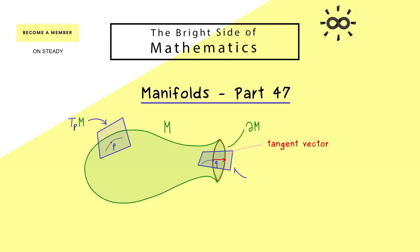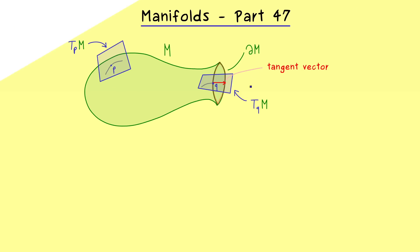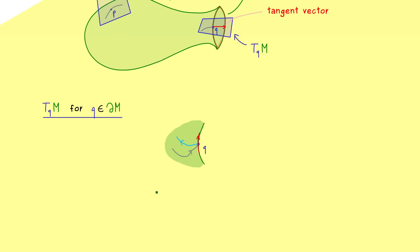With that we have all the ideas we need to define TqM for a boundary point q. This means essentially we can redo the definition already given in part 21. We don't need the whole manifold M, just a neighborhood around point q. In a rough sketch we just have part of the boundary, the inside of the manifold, and the outside. We can consider different curves — some that run into the point q, some that come out of q, and the last case that runs on the boundary through point q. From part 21 we use equivalence classes of these curves to define the tangent vectors.